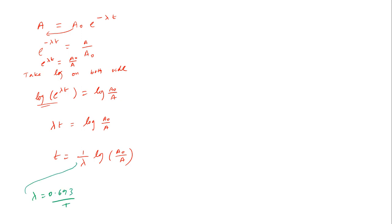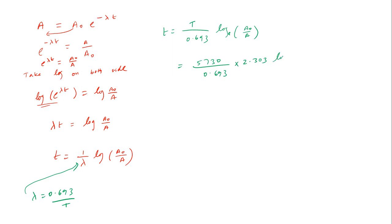Substituting lambda = 0.693 divided by t into the equation: t = (0.693 / lambda) × log base 10 of (A₀ / A). Inputting 5730 years for t, and taking log base 10 of (15/9), which equals log(5/3), giving a value of approximately 0.2218.